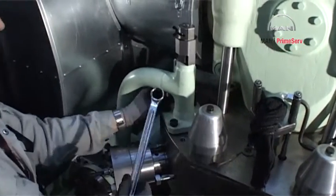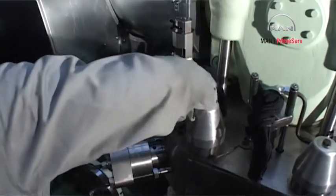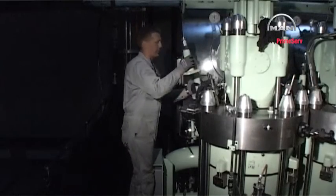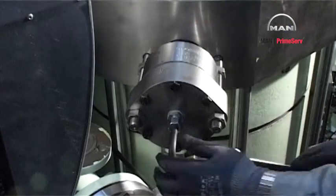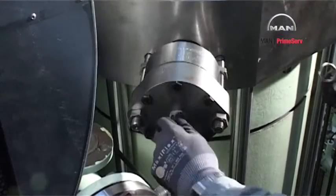Dismount the starting air pipe from the cylinder cover. Dismount the control air pipe from the starting valve.